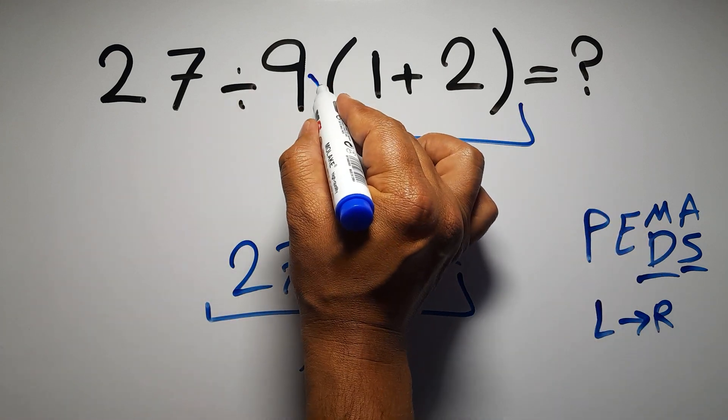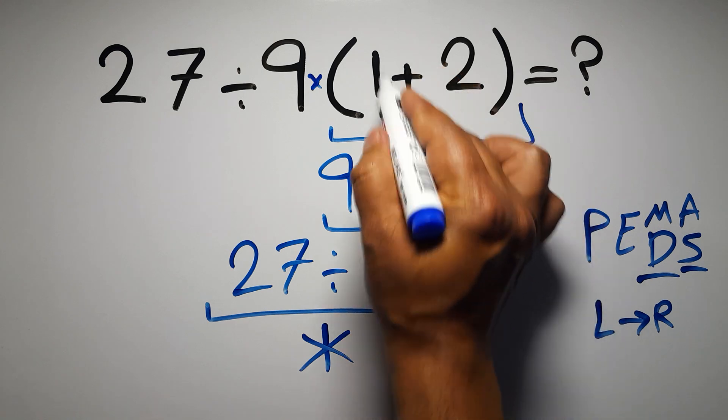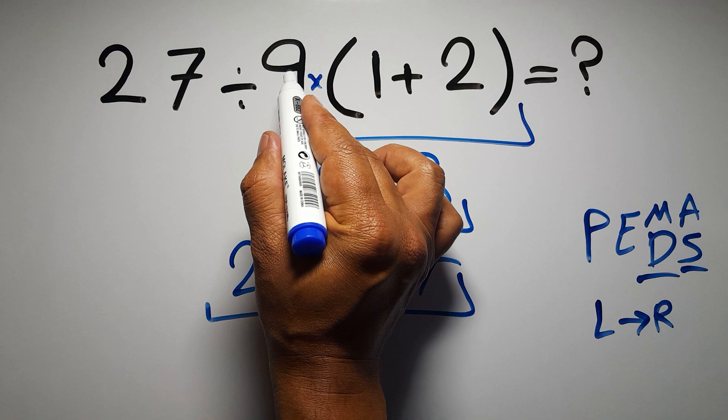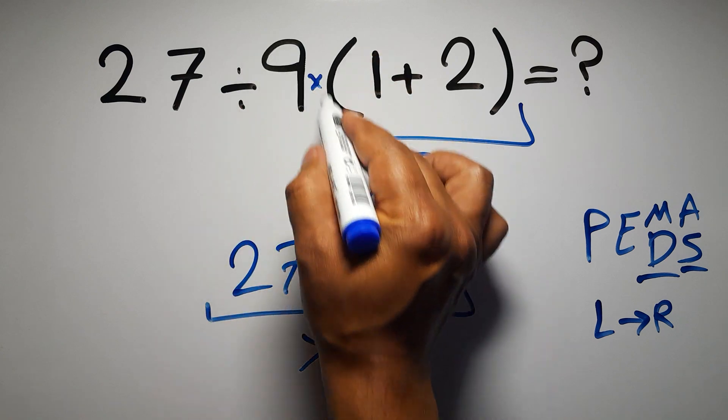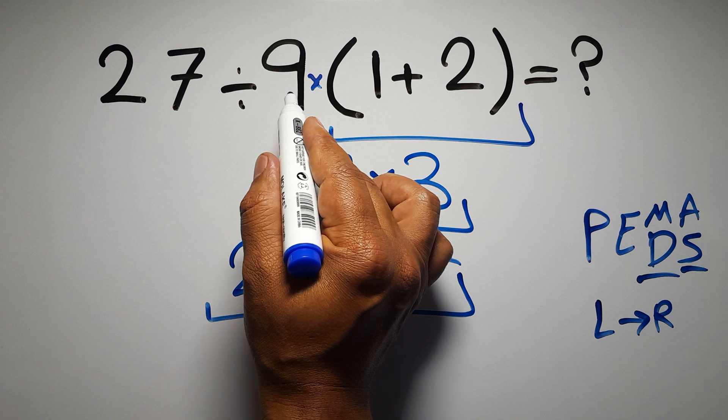In this expression we have one division, one multiplication, and one parentheses. Inside the parentheses we have one addition. We have a multiplication because in mathematics, when a number is placed next to parentheses it means multiplication. We usually don't write the multiplication sign for brevity.